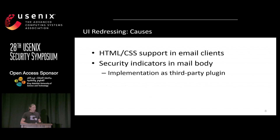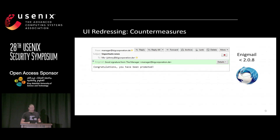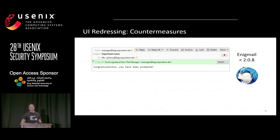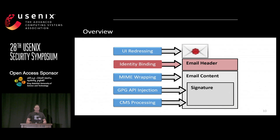This is kind of natural if you want to implement a third-party PGP plugin, and intuitive because it's the body that's signed. The countermeasure applied by Enigmail, the default PGP plugin for Thunderbird, is to move the security indicators out of the body — placing them up in the header area — which looks a bit odd but should be safer.